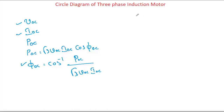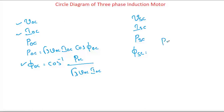Similarly, we should conduct an SC test, that is a block rotor test. From the block rotor test, we need to get the value of V_SC and I_SC. By placing a wattmeter, we can measure the power consumed during the short circuit test. After that, we need to find the power factor during the short circuit test: cos φ_SC = P_SC divided by (√3 × V_SC × I_SC). These values are required to draw the circle diagram of the three-phase induction motor.